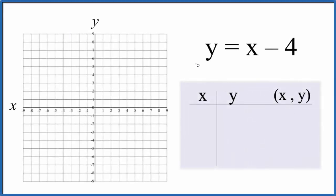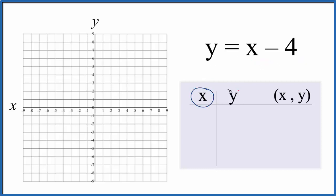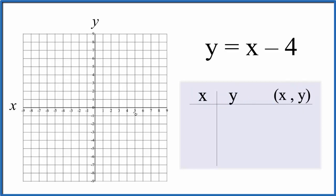Let's graph the linear equation y equals x minus 4, and we'll do it two ways. First, we'll put values for x in the equation, find the corresponding values for y, and then graph those points. Then we'll check our work with the slope-intercept formula, y equals mx plus b.